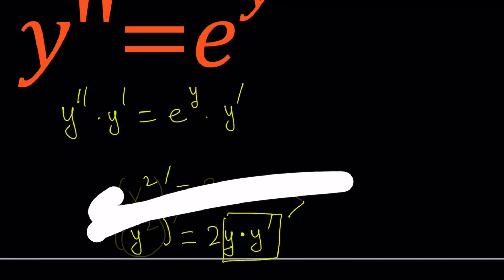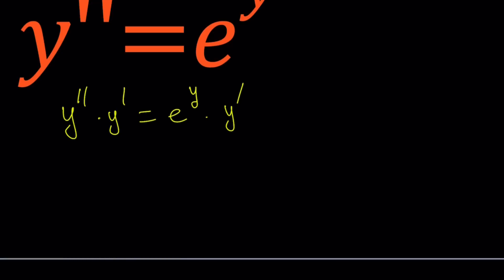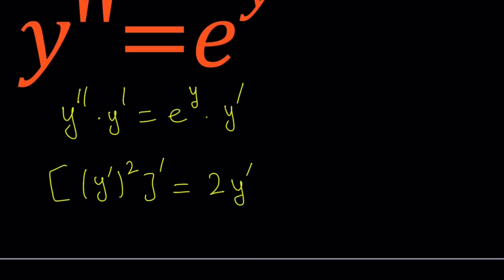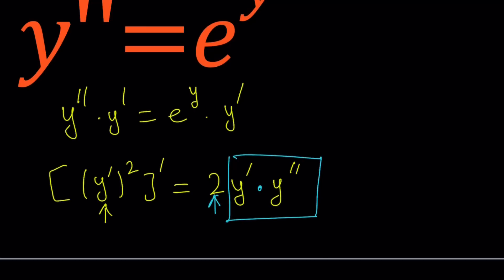So notice that the product of y and y prime comes together when I differentiate y squared. But I want the product of the first derivative and the second derivative, so I have to go up a derivative level. If you differentiate y prime squared, you bring the 2 to the front and multiply by the derivative of the inside, which is y double prime. So I got what I needed but with an extra 2 in front, so I need to multiply both sides by one half.